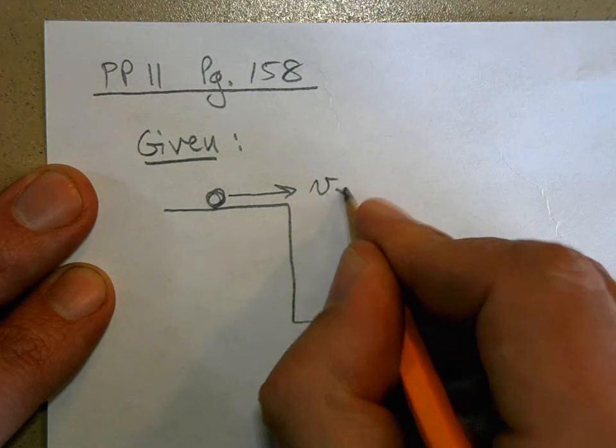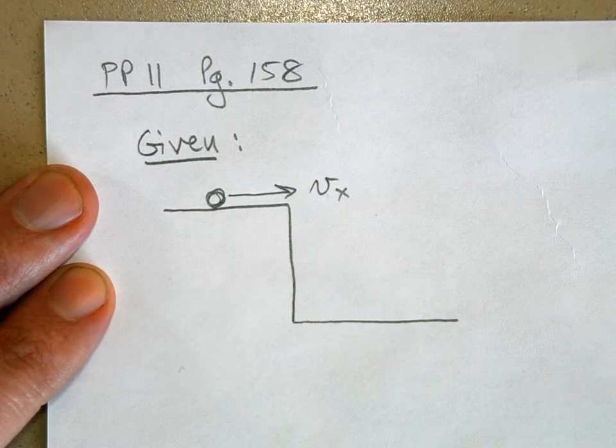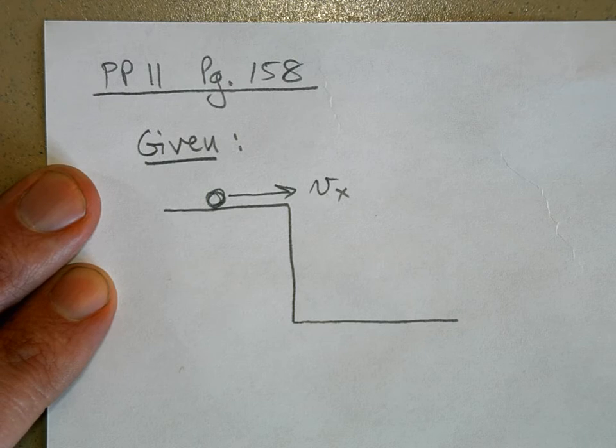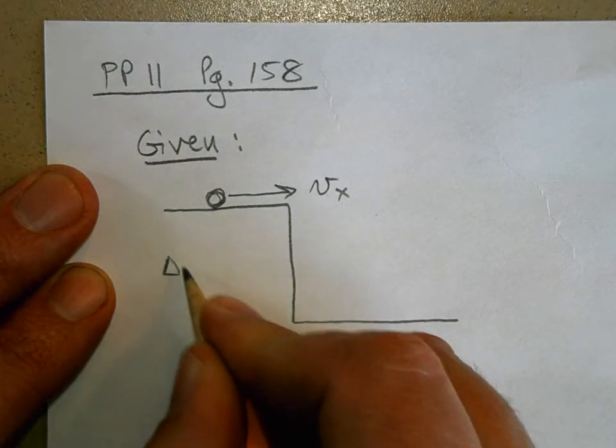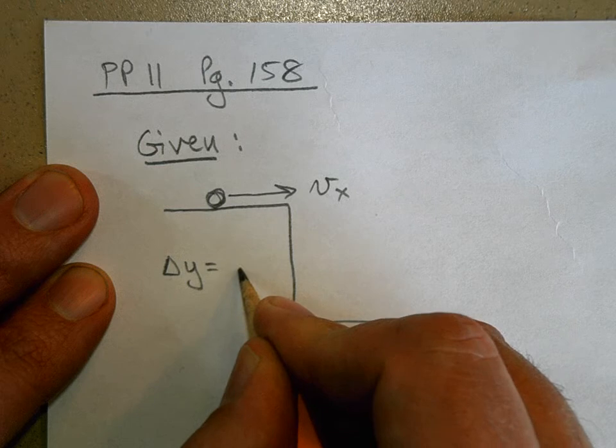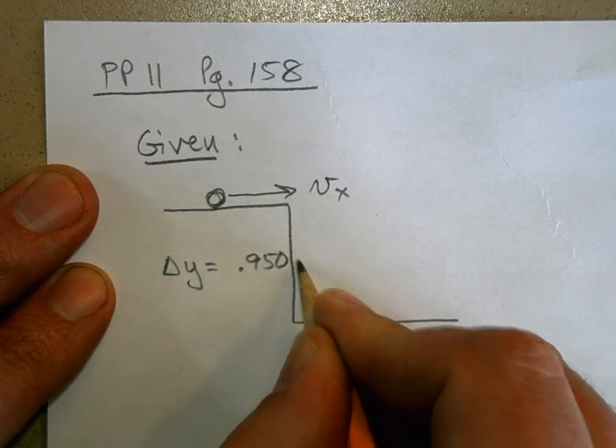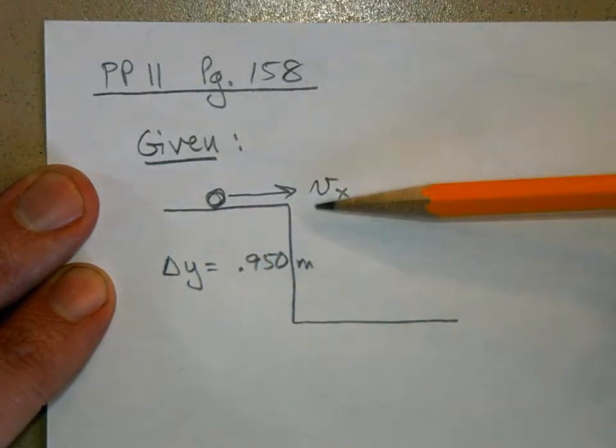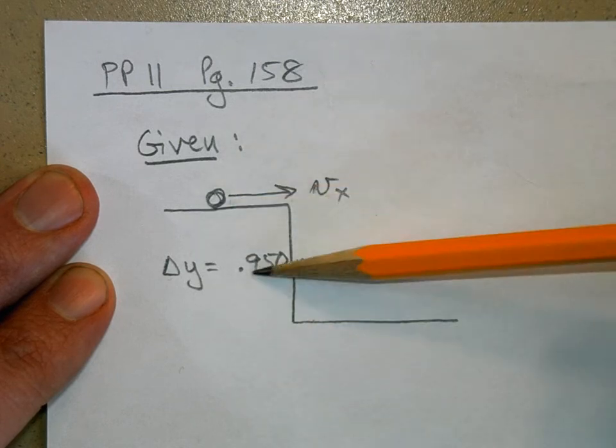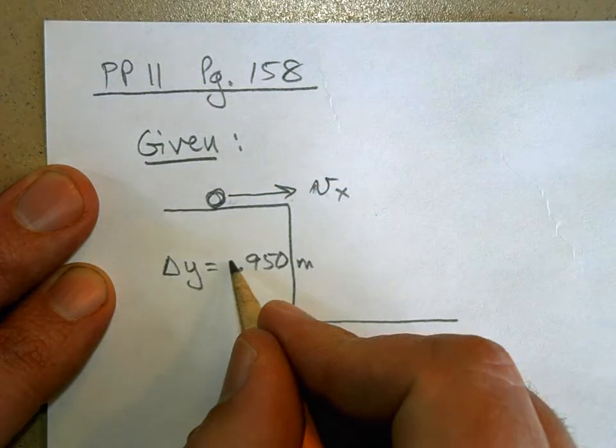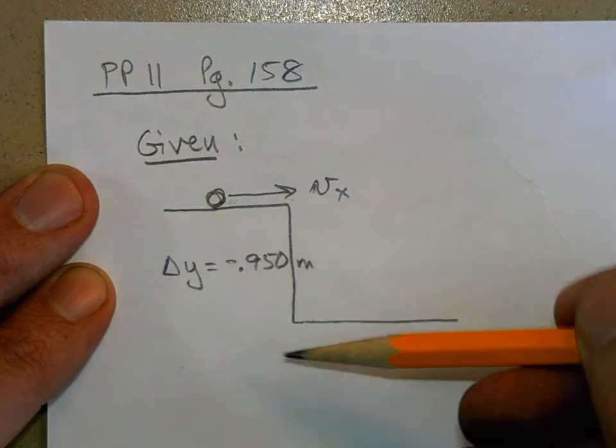So we'll call that Vx. We know that the table is given to have a height of 0.95 meters, so I'm going to call that Δy equals 0.950 meters. But notice that the ball falls down, so I'm going to say that the change in height of the ball is not 0.95 meters, it's negative. It's going to fall down, so you have to remember to make that negative.